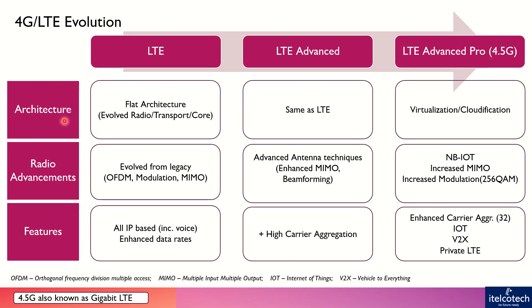We are comparing these three different advancements or phases on the basis of three things: one, is there any evolution in the architecture? Two, are there any advancements in terms of the radio access network? And three, what are the new features that are embedded in these new phases?